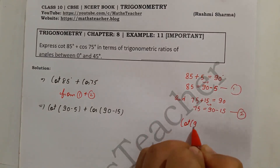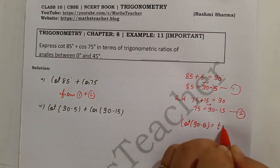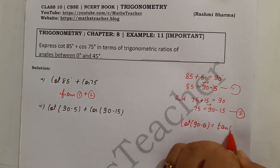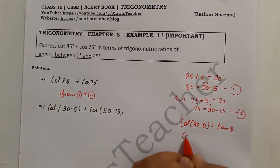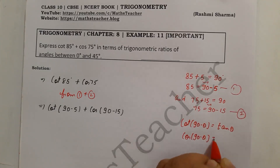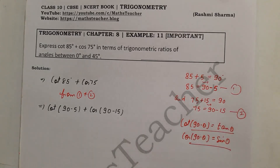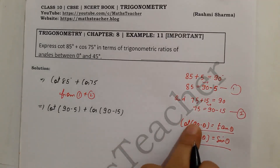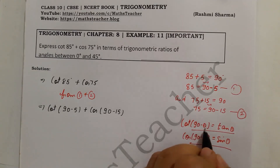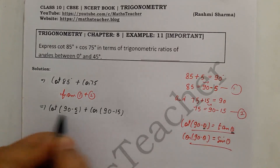Using the complementary angle identity: cot(90° − θ) = tan θ, and cos(90° − θ) = sin θ. Applying these identities, we transform the expression. The angle θ is our reference angle, and we apply the transformation accordingly.